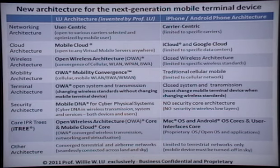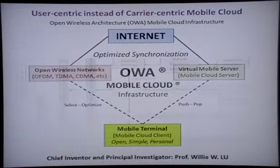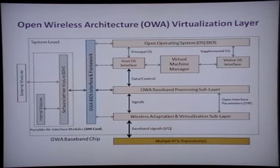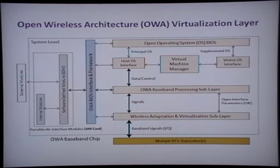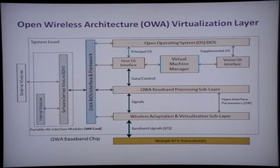The terminal architecture uses OWA open system transmission. This means when you change the wireless standards, you don't have to change the wireless terminal. If you look at the left side of the diagram, we have portable air interface modules — we call them the next-generation SIM card. When you change the wireless standards, you don't have to change the wireless device; you just change the wireless card. You change the card, you change the standards, and the device stays the same. That's the totally original approach — the open wireless architecture for the next-generation terminal.